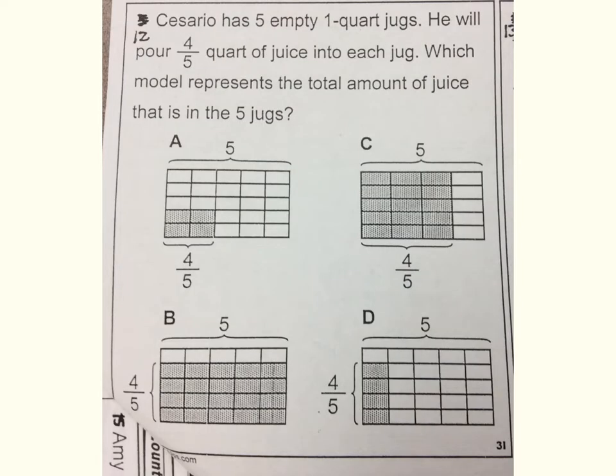Number twelve. Cesario has five empty one-quart jugs. He will pour four-fifths quart of juice into each jug. Which model best represents the total amount of juice that is in the five jugs?